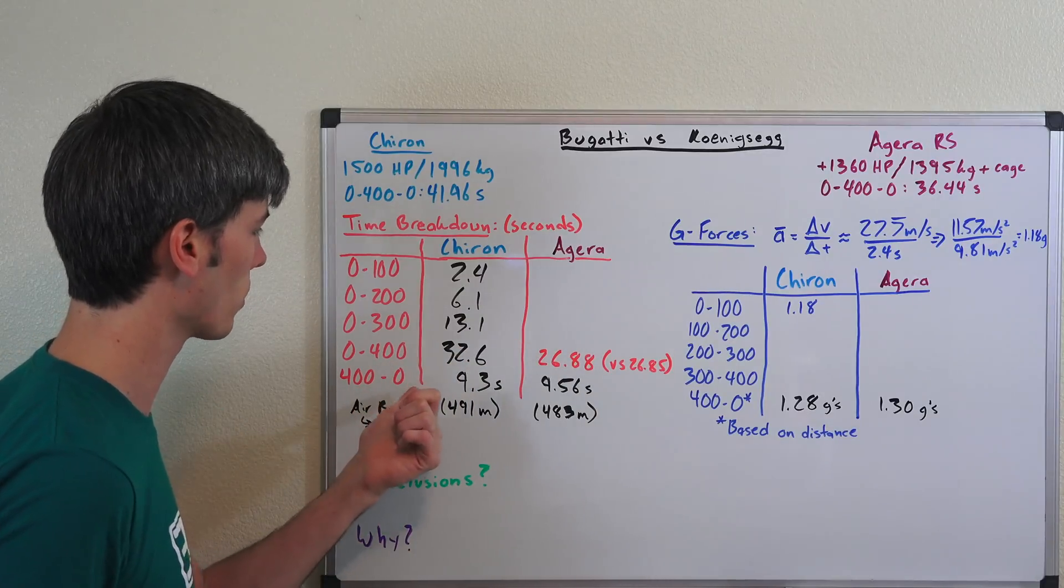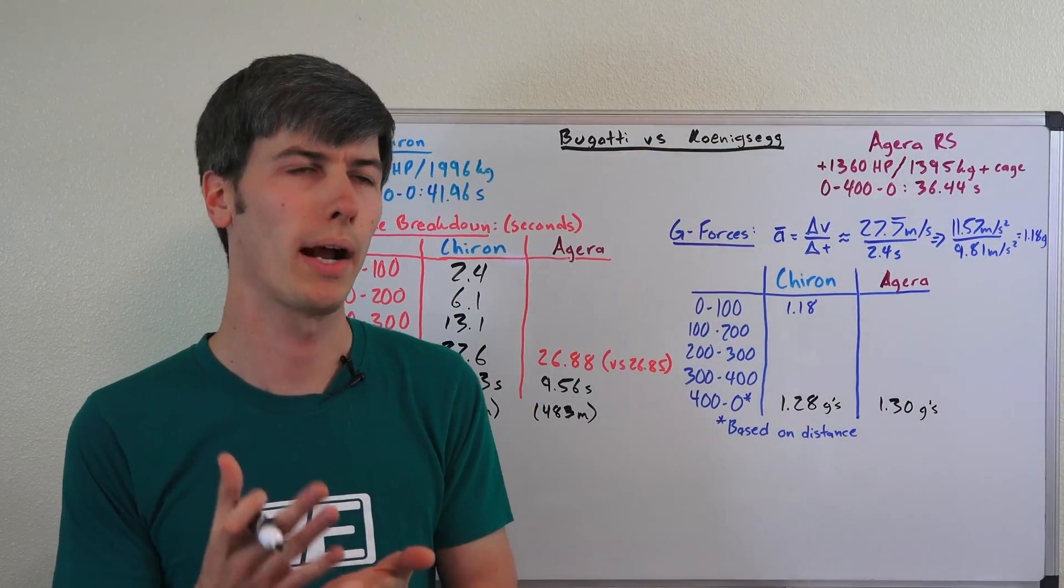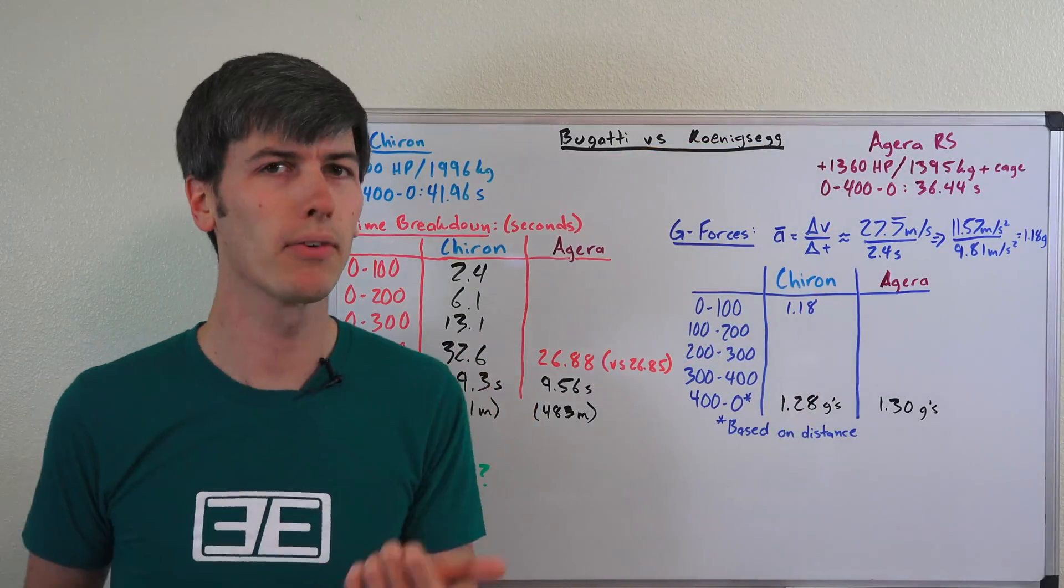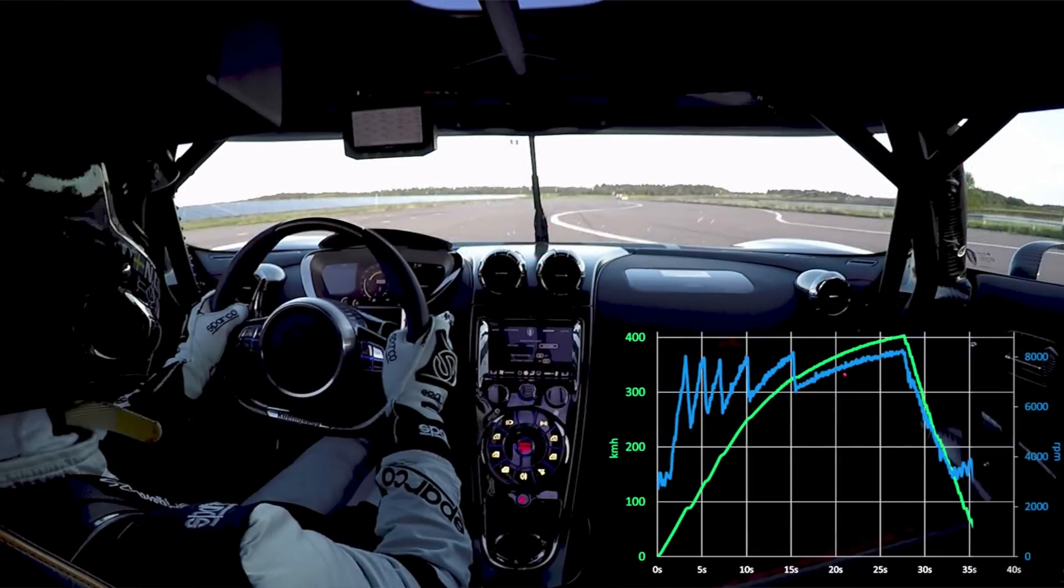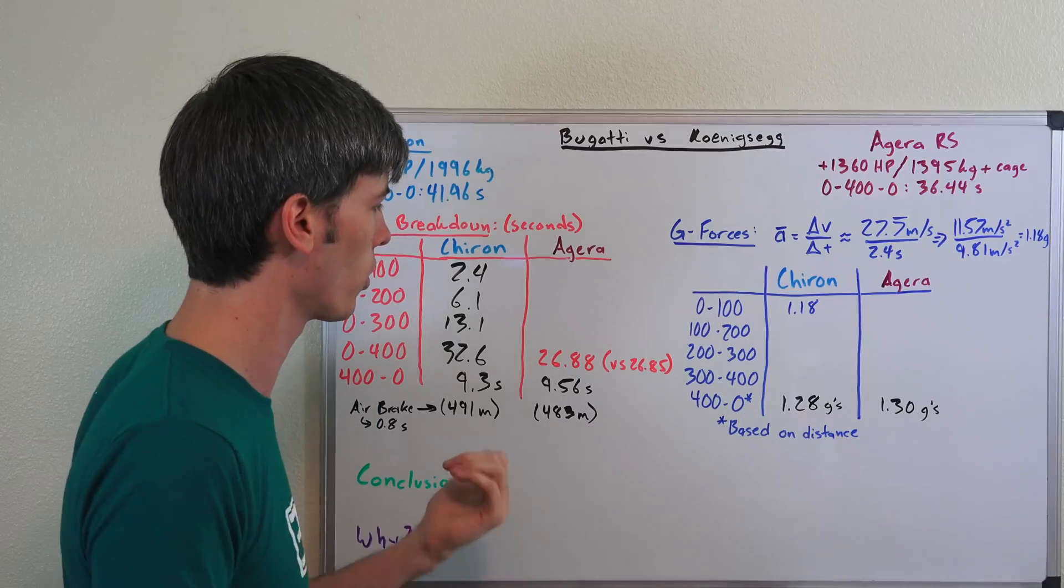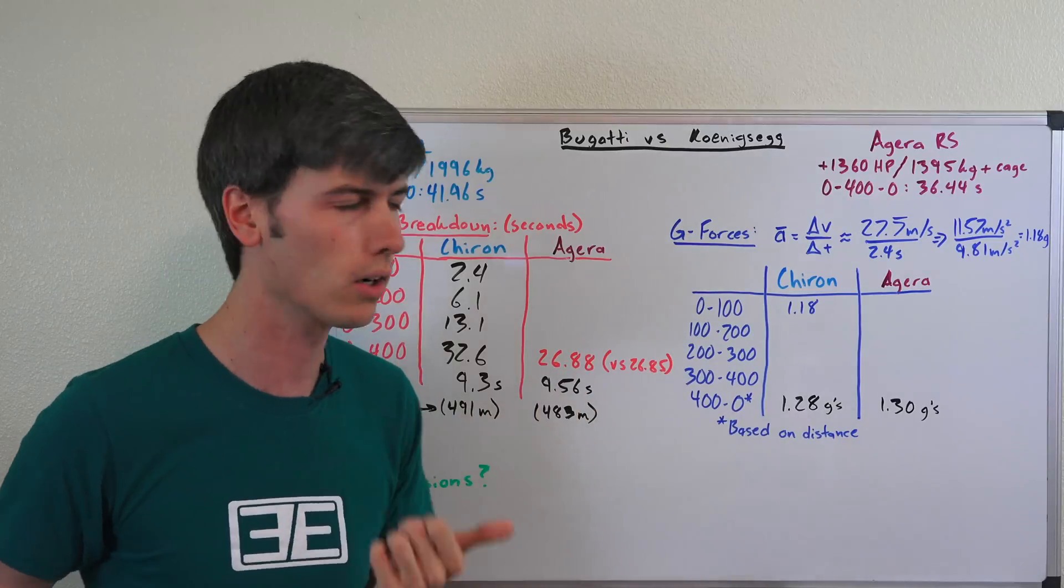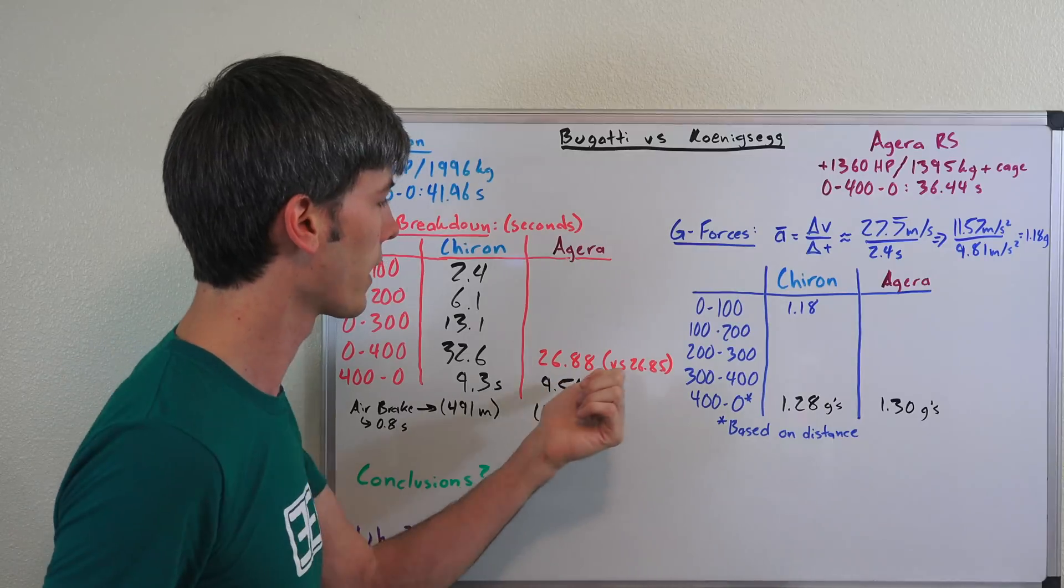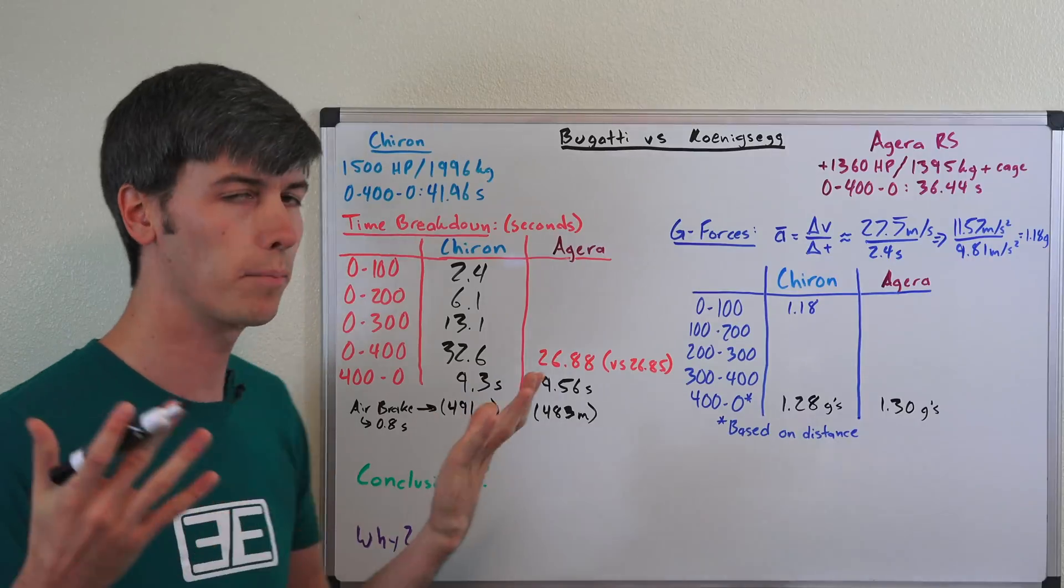Then they were able to brake from 400 down to zero in 9.3 seconds. Now Koenigsegg didn't provide their 100, 200 or 300 kilometer per hour times but they did provide the 400 to zero and the 0 to 400 and they also have a plot of the acceleration on their YouTube video. So what I did is I literally took that plot from their YouTube video and counted pixels to estimate their 0 to 100, 200 and 300 times. I did a control: counting pixels the way I did it I got 26.85 seconds versus their claim which was 26.88 seconds, only off by three hundredths. Basically what I'm saying here is you can trust these numbers.